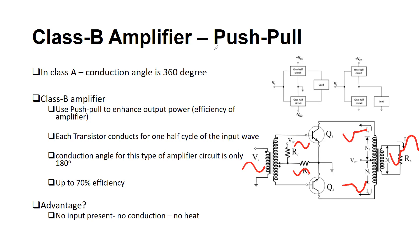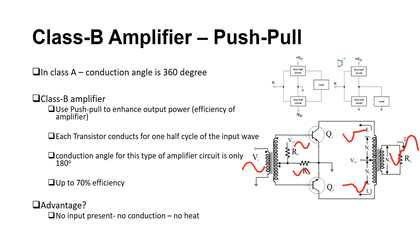The class B amplifier is also called the push-pull amplifier. There are lots of different classes of amplifiers, such as class A, class B, class AB, class C, and class D. All these configurations have their advantages and disadvantages.